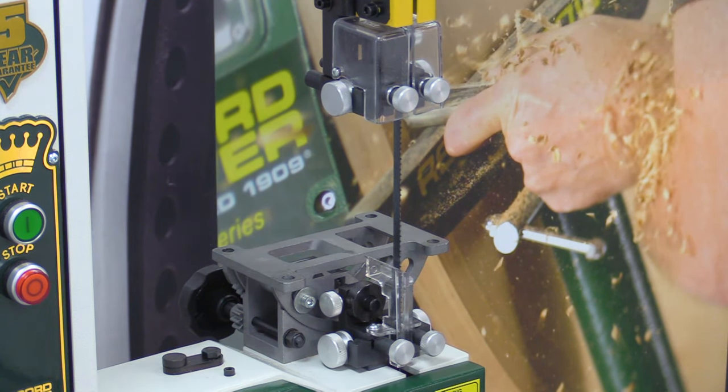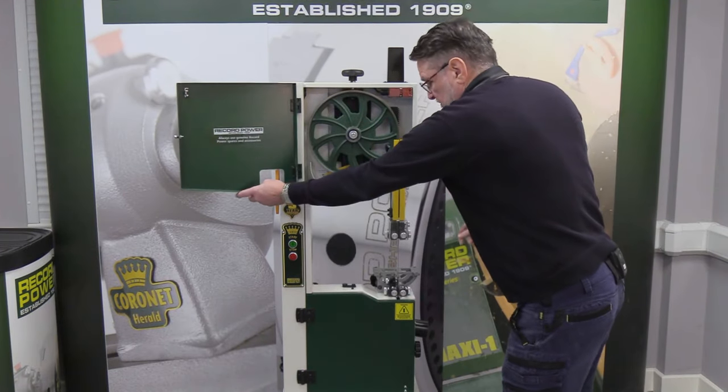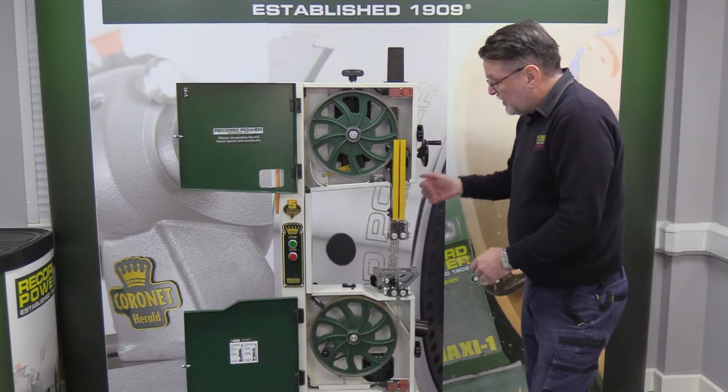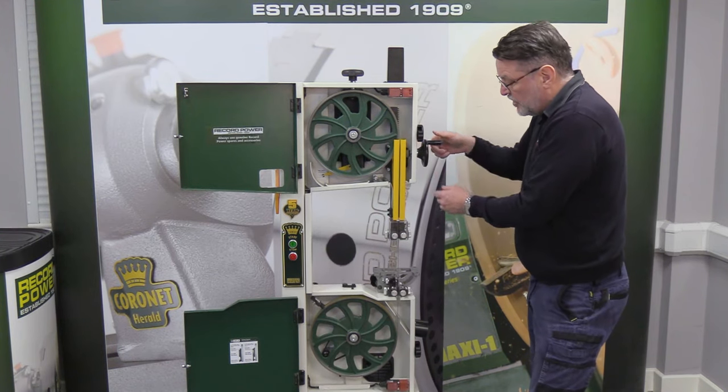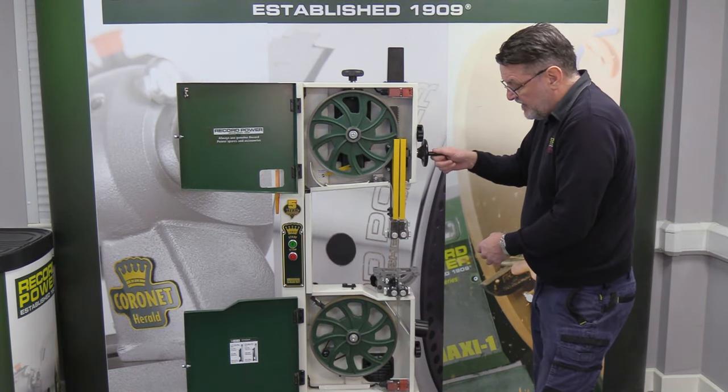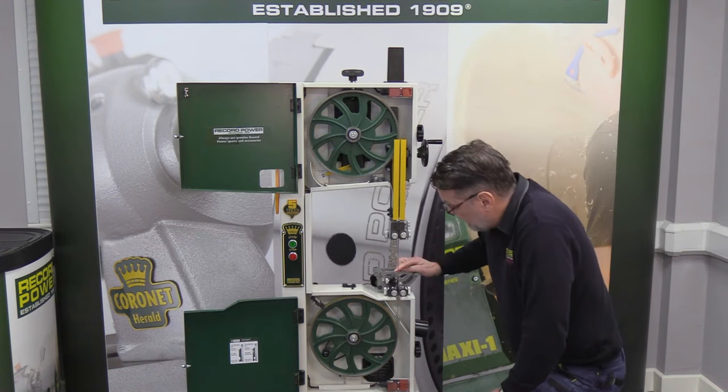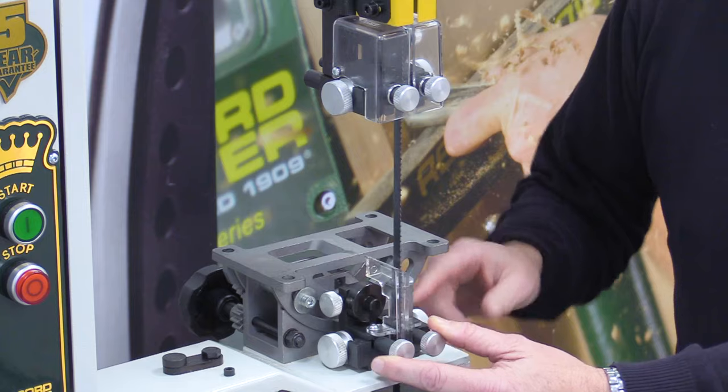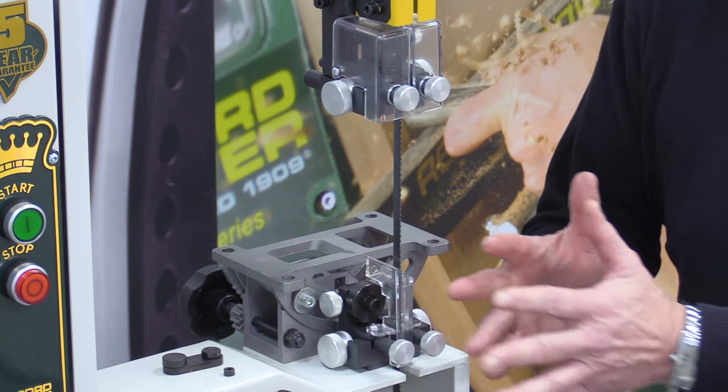So you've got a general rise and fall for adjusting your upper block which is just the unlock and the rise and fall on there and then on the lower guides we've got a socket head cap screw on there that you can adjust to take the block forward and back.